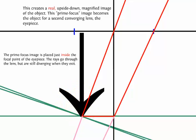Now what's going to happen here is this image created by the objective lens is going to become the object for the second lens, the second lens being the eyepiece.